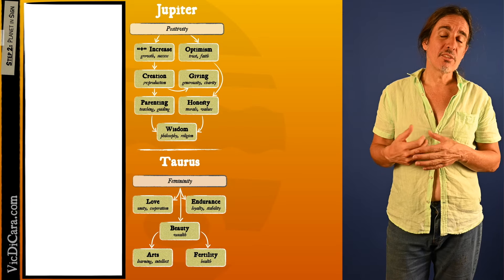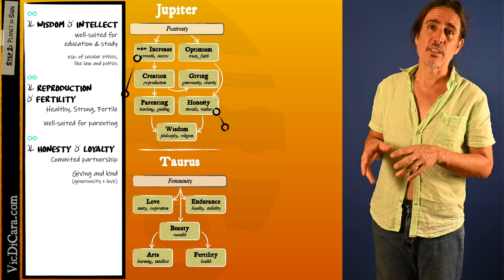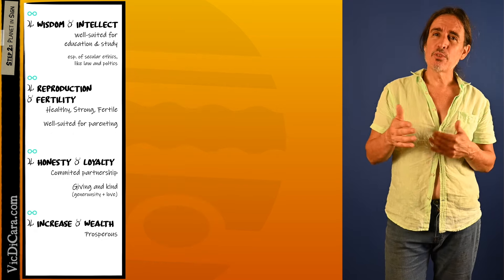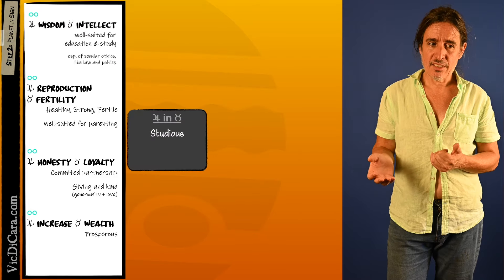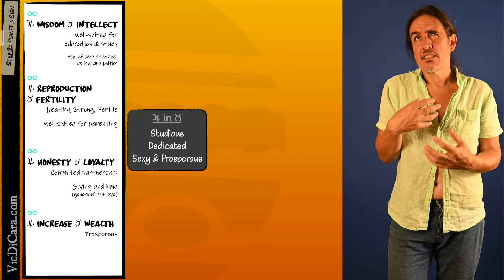Now step two: what does Jupiter in Taurus symbolize? I also have already done a video on Jupiter in Taurus and I'll put a link to that as well in the description if you want to get the details and nuances of that. But for now the summary is Jupiter in Taurus symbolizes studiousness, dedication, and a sexy prosperity.